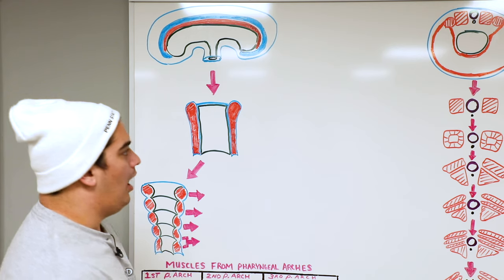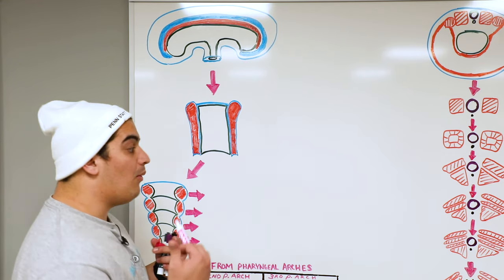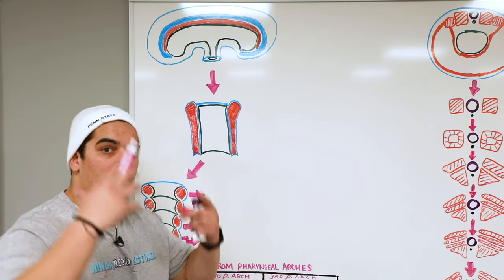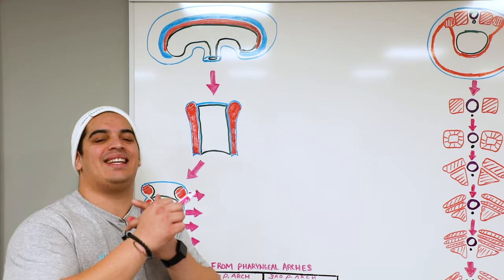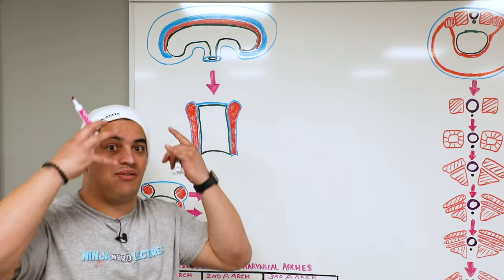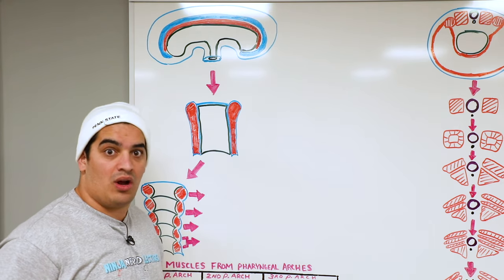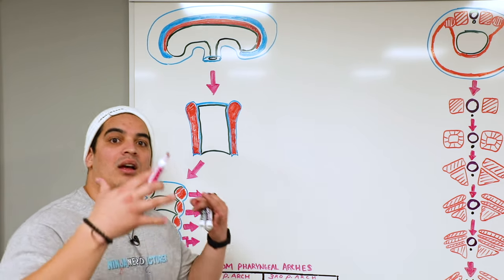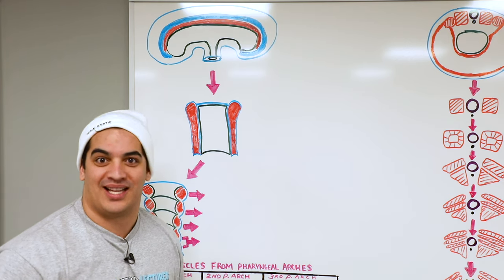Alright Ninja Nerds, let's start talking about the development of the muscular system. Please go watch the development of the skeletal system because the path we're going to take in this video is the exact same. We'll start with muscles of the face, head, and neck, then muscles of the trunk, then muscles of the limb — following the exact same path as the skeletal system development. All we're doing now is putting muscles over bones.